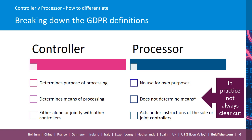Moving on to the boxes at the bottom of the slide, and first looking at the controller side, the controller determines processing either alone or jointly with other controllers. So it can be what is referred to as a sole controller on its own, or it could be a controller jointly with other controllers. By contrast, the processor is acting under the instructions of the sole or joint controllers — this is the section of the GDPR definition which refers to the processor processing personal data on behalf of the controller. In practice, what that translates into is that they're acting under their instruction.